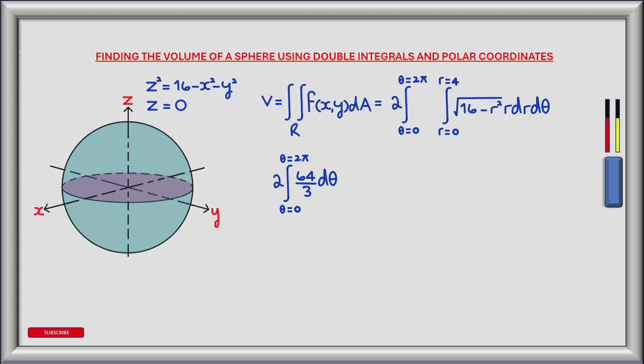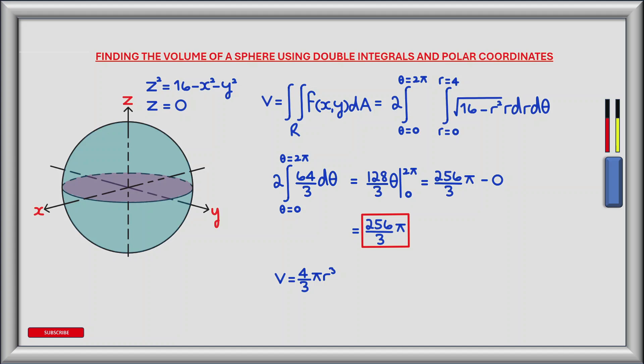Now turning to the outer integral, we integrate from theta equals 0 to theta equals 2 pi of 64 over 3 d theta, and multiply the result by 2 since we only calculated half the sphere. Using the power rule and multiplying through by 2 gives 128 theta divided by 3. Evaluating between 0 and 2 pi: plugging in 2 pi gives 256 pi divided by 3, and plugging in 0 gives 0. So our final answer is 256 pi divided by 3. To verify, the volume of a sphere formula four thirds pi r cubed with r equals 4 gives four thirds pi times 64, which equals 256 pi divided by 3 — confirming our result.